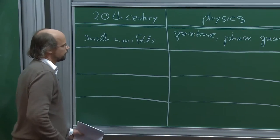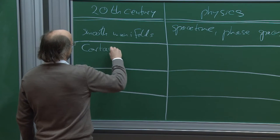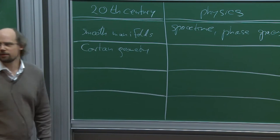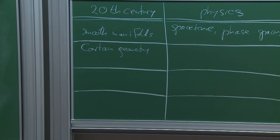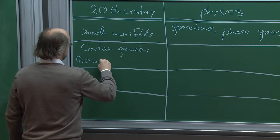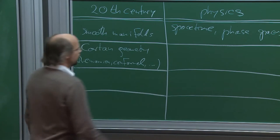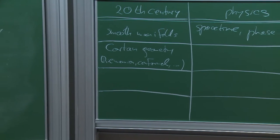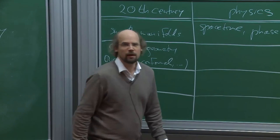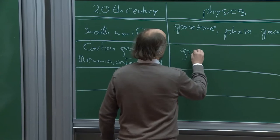Also introduced in the 20s was the concept of Cartan geometry, which is a generalization of Riemannian geometry — it also contains conformal geometry and more. So we have Riemannian, conformal, complex, and all kinds of extra structure you can put on a smooth manifold. Famously, this is now around the 100th anniversary of the insight that this in physics describes the field of gravity.